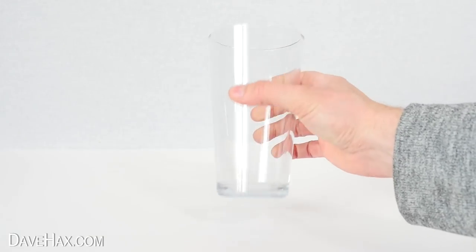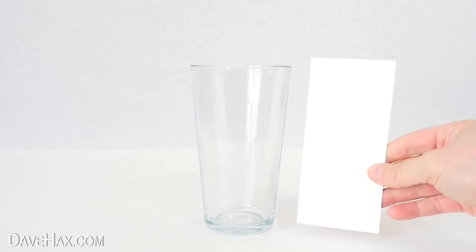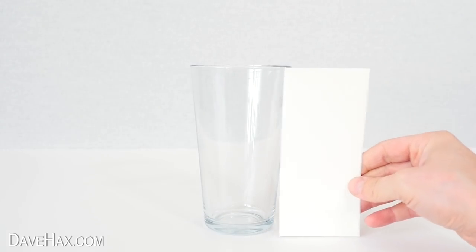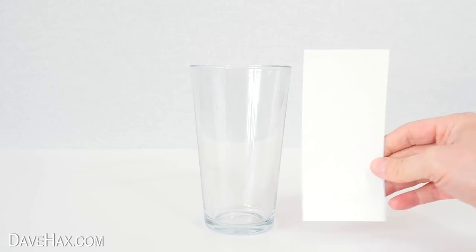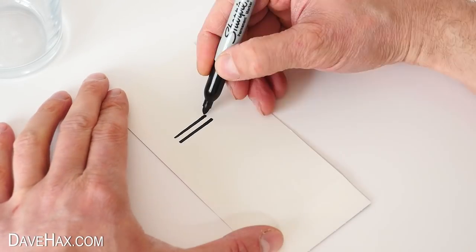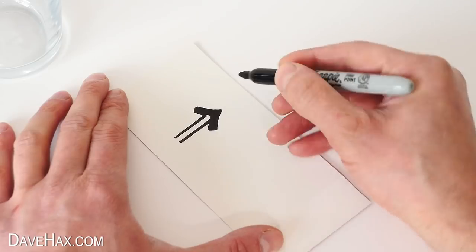For the first one we need to take a clear drinking glass and a piece of white cardboard or paper roughly the same size. Give your child a felt tip pen and ask them to draw a thick arrow on the card like this.